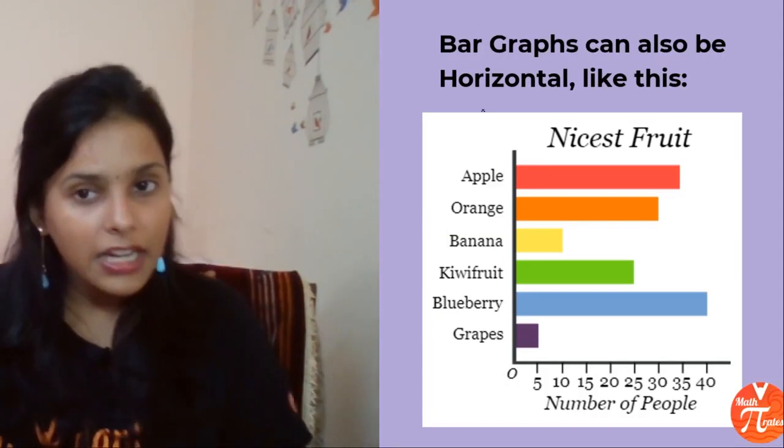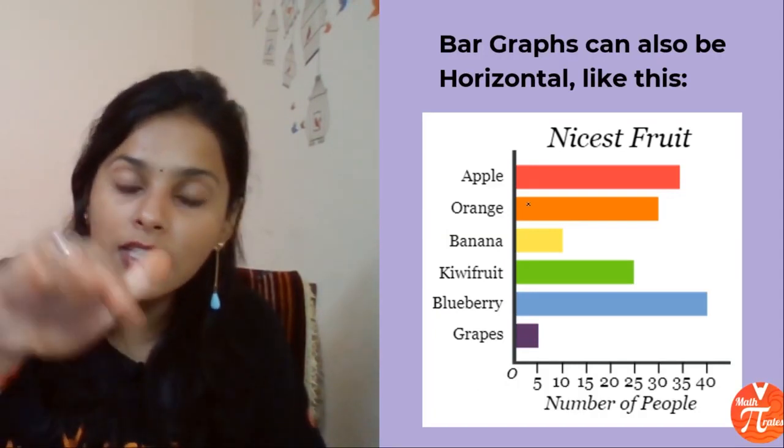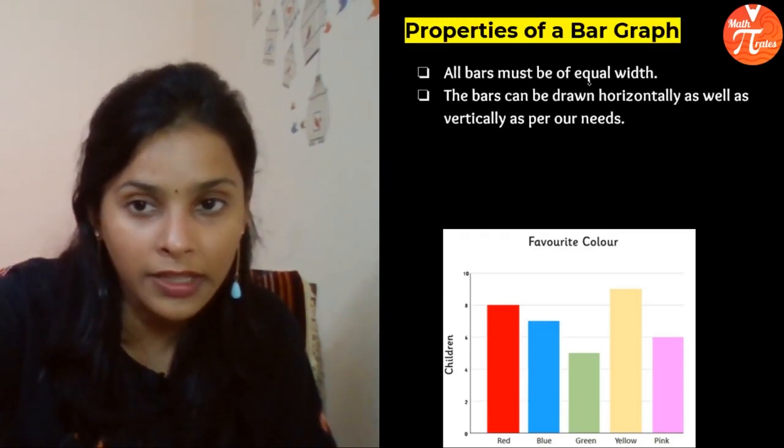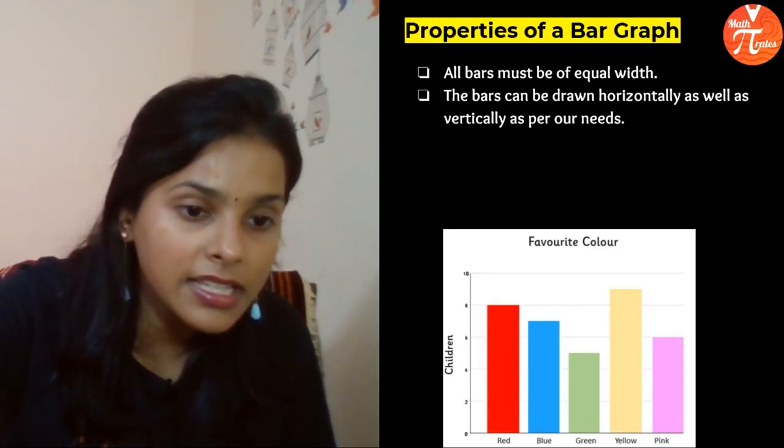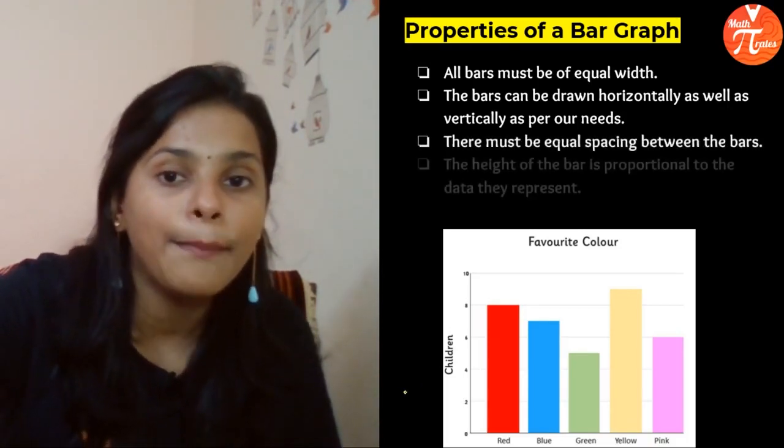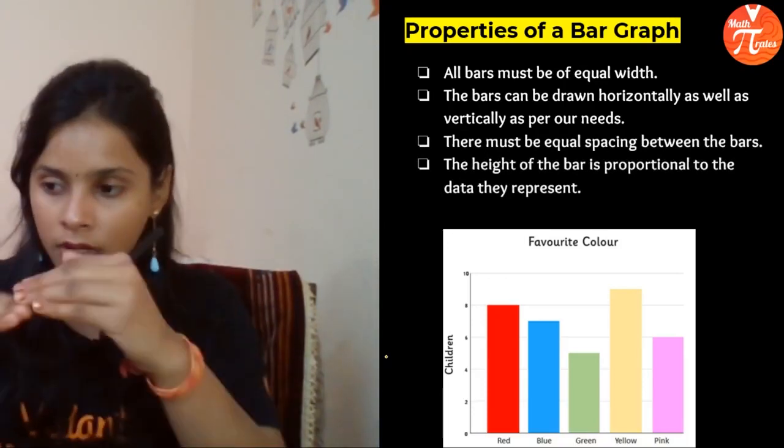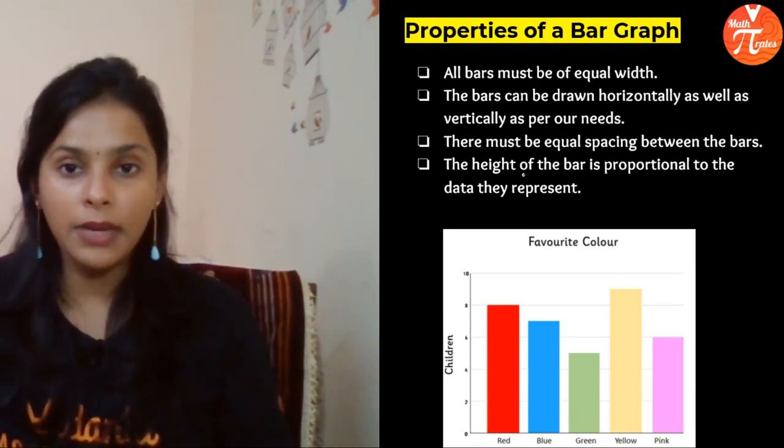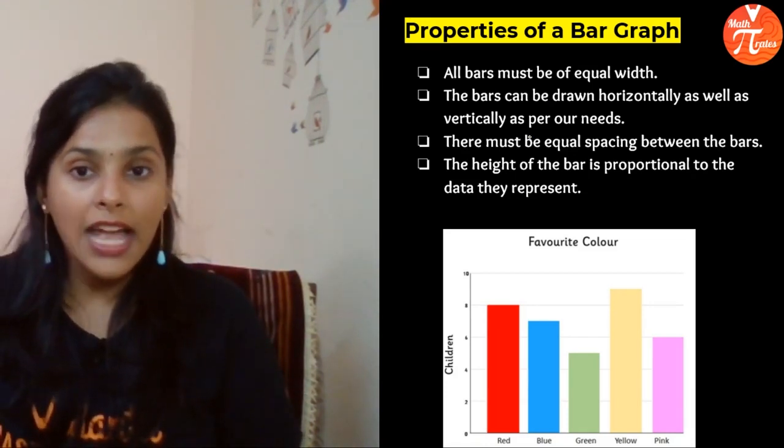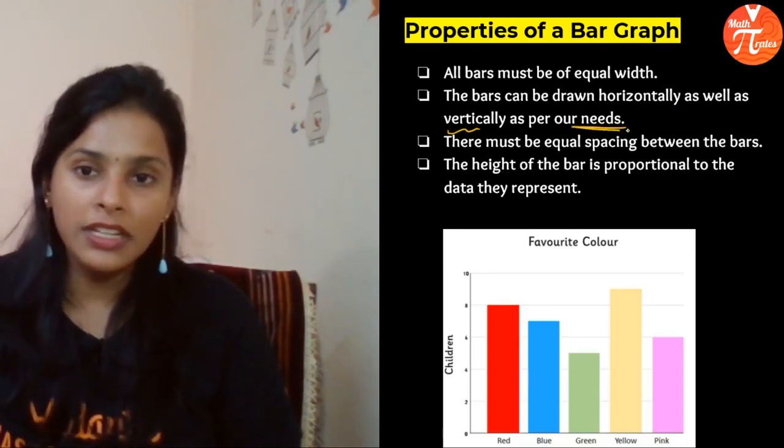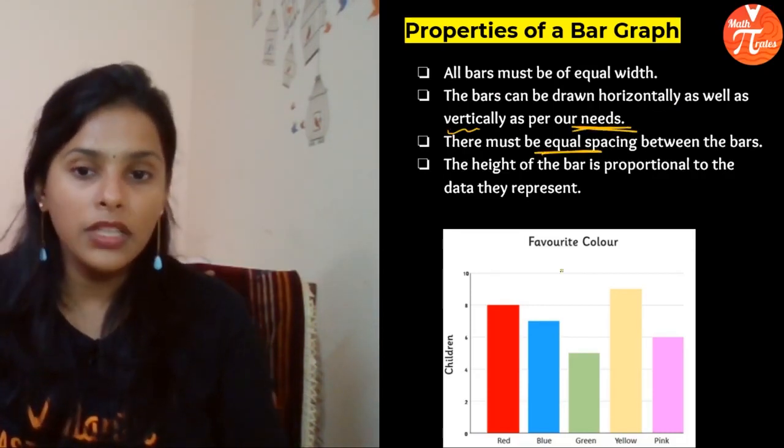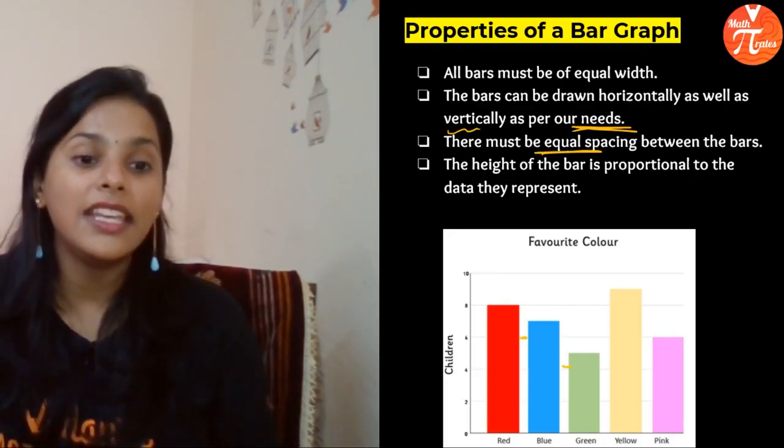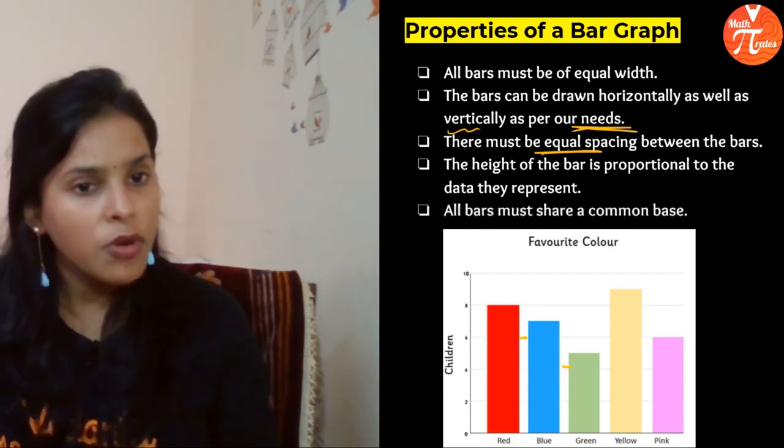Bar graphs can also be represented in horizontal form. What are the properties? Bars have to be in equal width. The width should be equal for every rectangular bar. Bars can be drawn horizontally as well as vertically as per our needs. There should be equal spacing between the bars. Height will tell you the exact value of the data and its base is common.